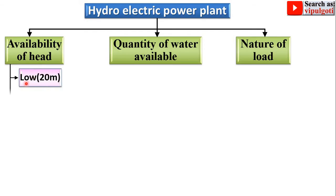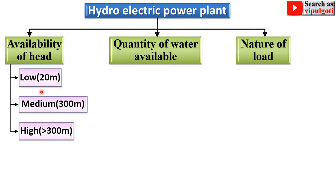According to availability of head, it is further classified into three categories: low head, medium head, and high head. For low head, the available head is less than 20 meters. For medium head, it is 20 meters to 300 meters, and for high head, it is greater than 300 meters.